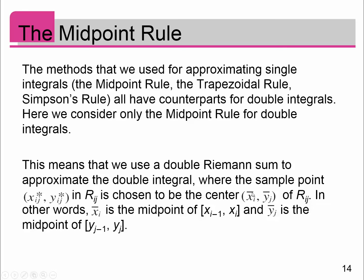This is the notation I'm going to use from this point forward to represent the center of each of my sub-rectangles. So x̄ᵢ is the midpoint of each sub-interval xᵢ₋₁ to xᵢ, and ȳⱼ is going to be the midpoint of yⱼ₋₁ to yⱼ.